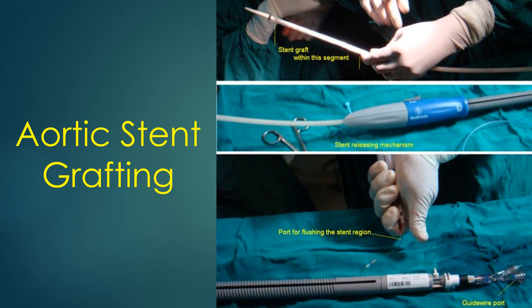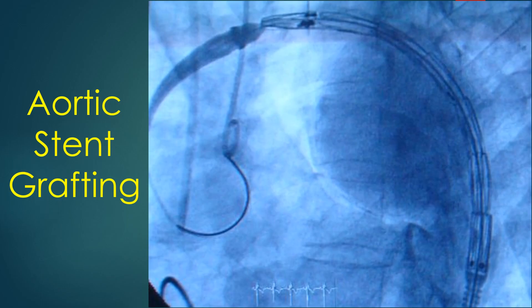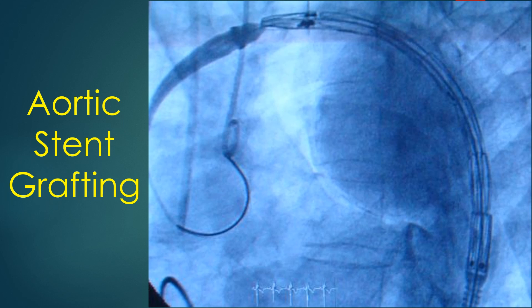The stent graft is mounted at the distal end of the device, with a guide wire port at the proximal end. A fluoroscopic image shows the aortic stent graft positioned in the arch and descending thoracic aorta, ready for deployment, with a saccular aortic aneurysm visible in the background. Shortening during expansion must be taken into consideration during positioning; comparison charts of shortening for each stent diameter are provided as a product insert. Failure to account for this may result in the stent graft not covering the lesion completely, leading to endoleak.